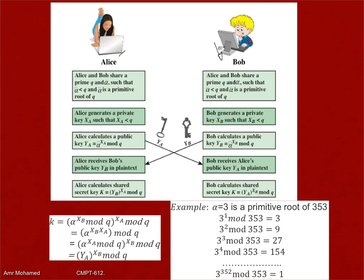Diffie-Hellman is in fact proof against any passive attack. A passive attacker who is listening will get the values of YA and YB, and the values of alpha and Q, but will never be able to guess XA or XB, and as a result will never be able to guess K. So this is secure against passive attacks.